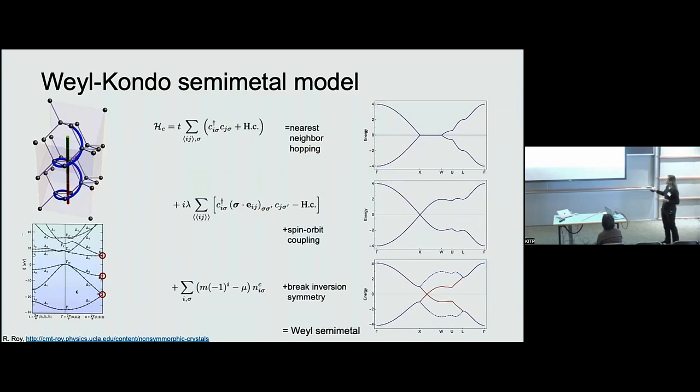Next, we can add some spin orbit coupling, because we know that's very important for topological states. That actually gets you a non-symmorphic symmetry enforced Dirac semi metal with a Dirac cone centered at the X points of the FCC Brillouin zone.